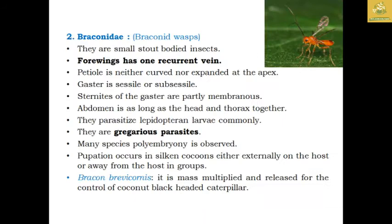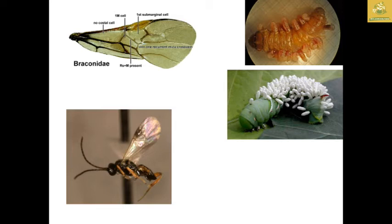The family Braconidae comprises stout-bodied insects. The forewings have one recurrent vein. They are gregarious parasites on lepidopteran larvae. The abdomen is as long as the head and thorax together. Pupation occurs in silken cocoons either externally on the host or away from the host in groups. Example: Bracon brevicornis, which is mostly multiplied and released to control black-headed caterpillars in coconut. There are no costal cells, and only one recurrent crossvein is present.